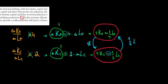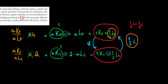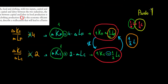Now, the food company receives 1/2 unit of labor, but it only required 1/4 unit of labor in exchange for one unit of capital. Since 1/2 = 1/4 + 1/4, the food company gets an extra 1/4 unit of labor beyond what it required. By definition, this is a Pareto improvement — the food company is getting more than it requires.